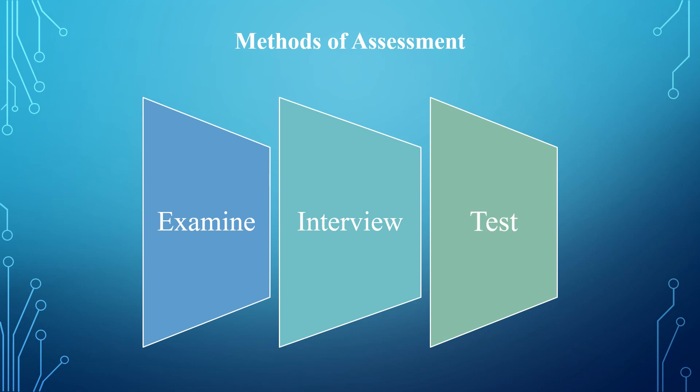To conduct an assessment on AC-7, you request that a system administrator try to log into the application with the wrong password. The administrator will try the first attempt, the second attempt, and at the third attempt the system should lock out if it is properly configured. If the system did not lock out at the third attempt, then the AC-7 control is other than satisfied.